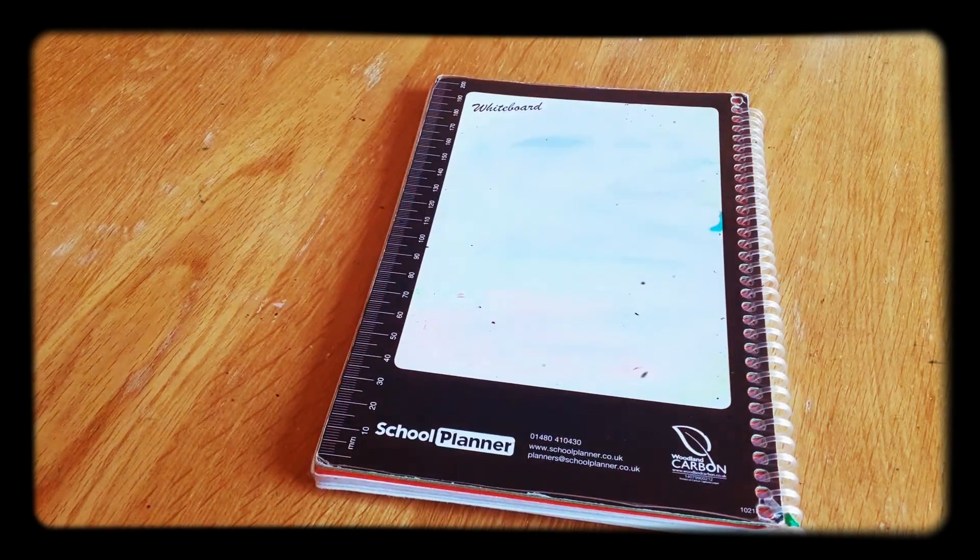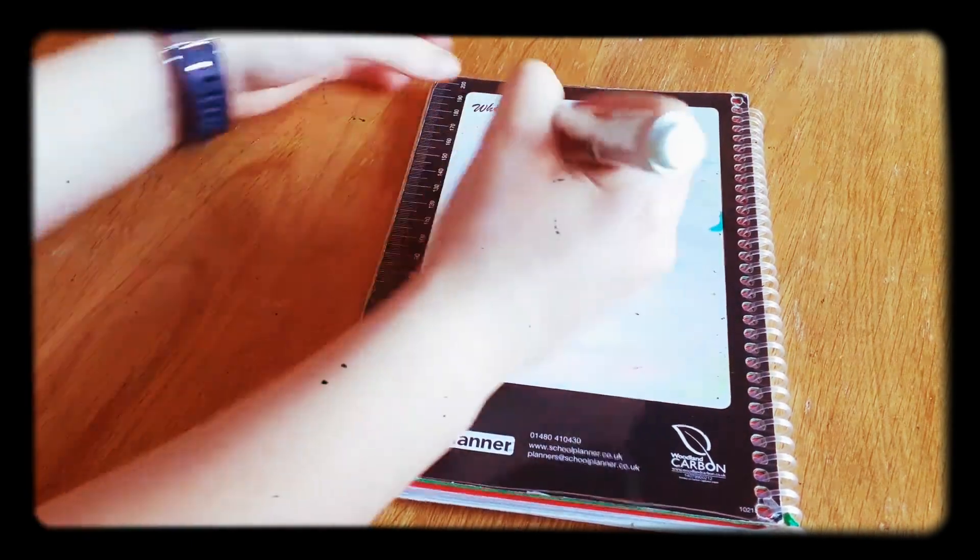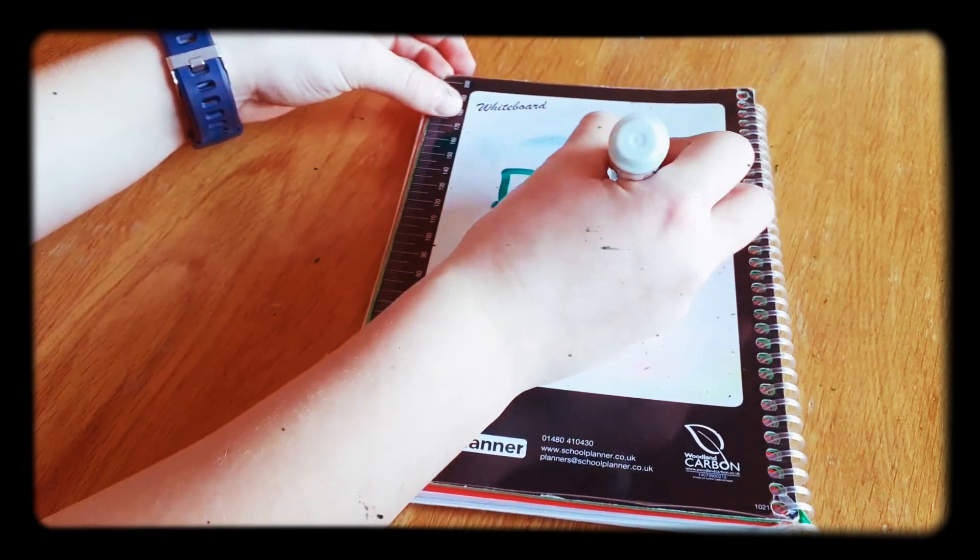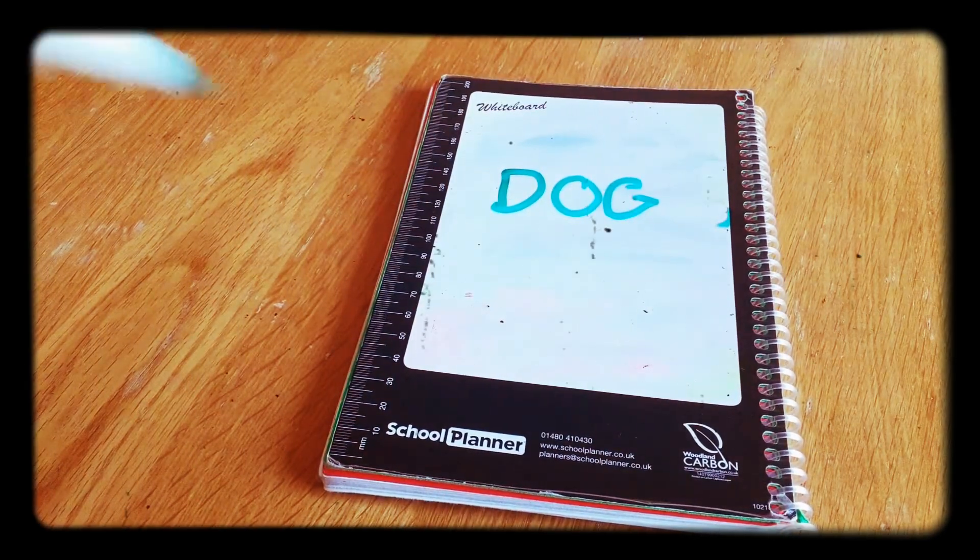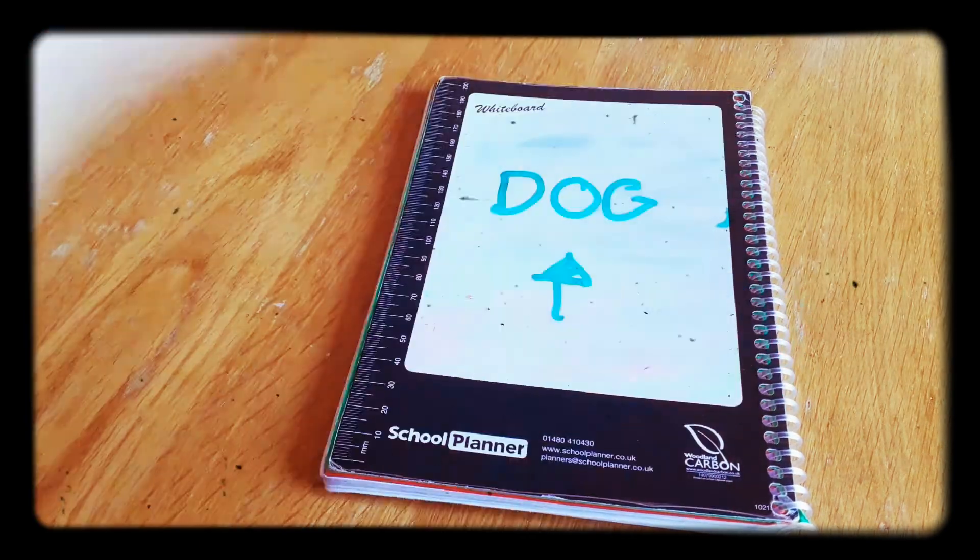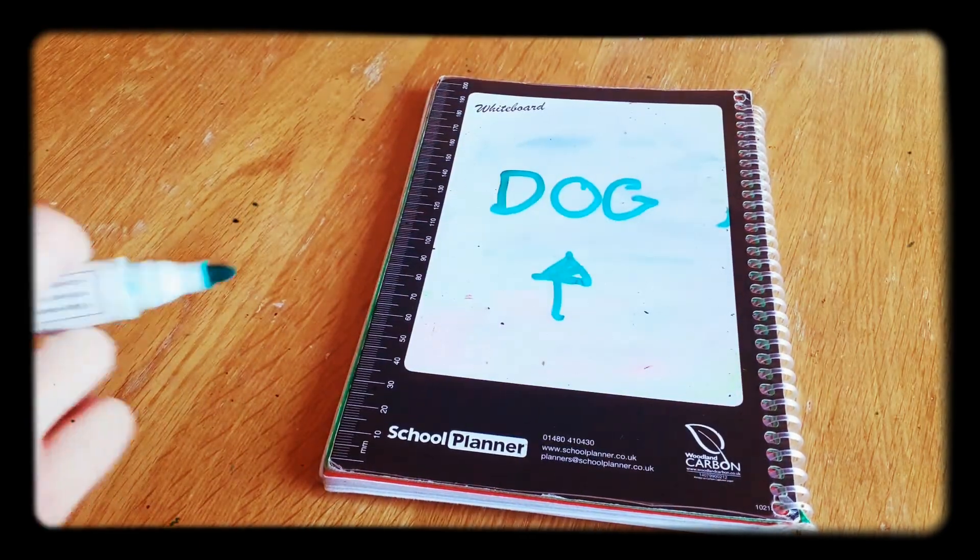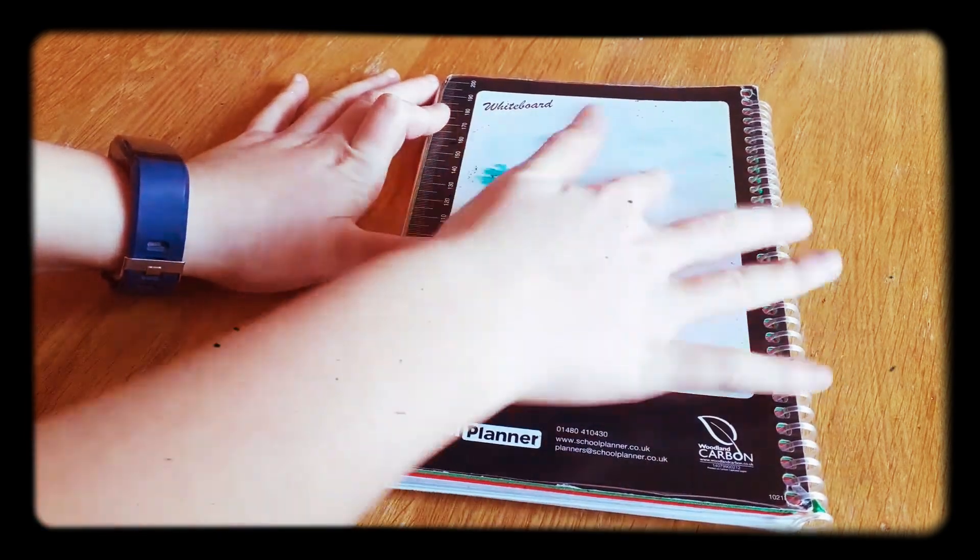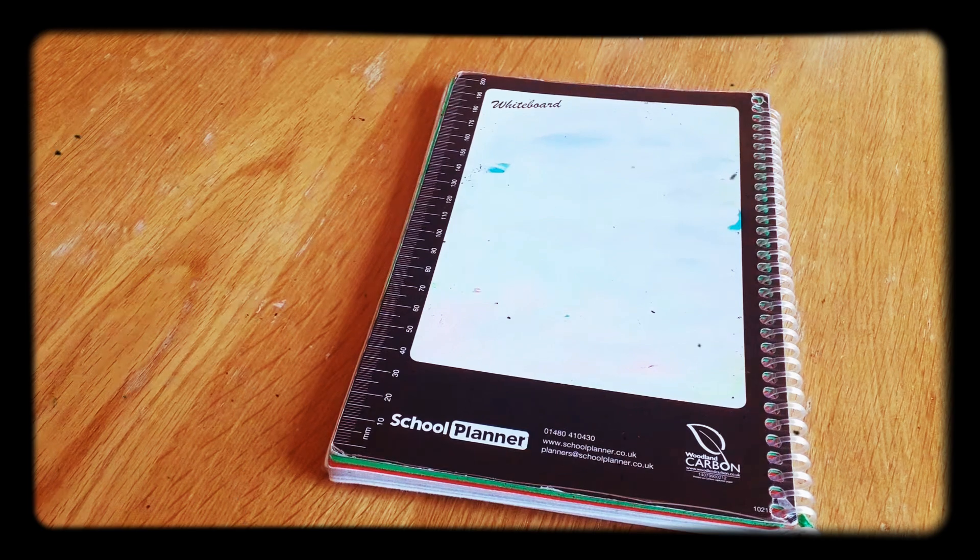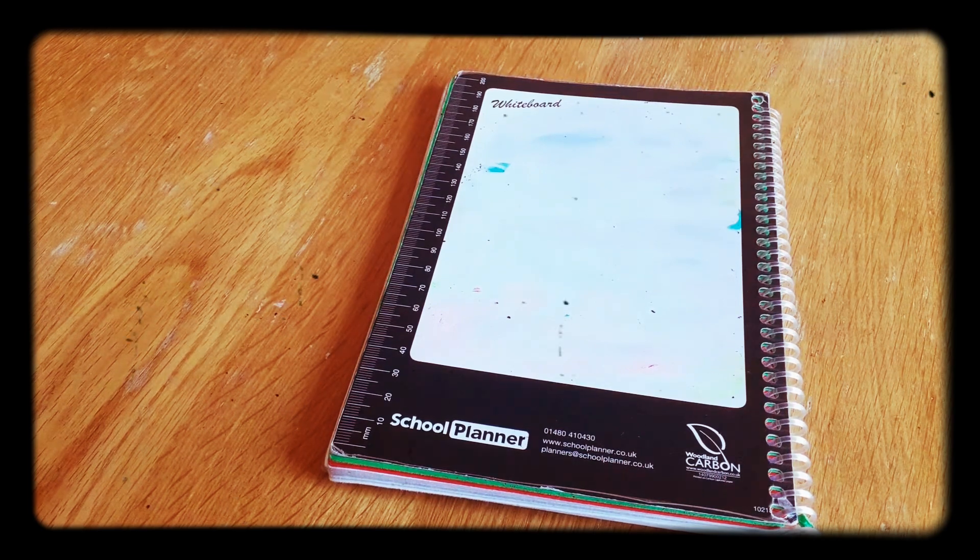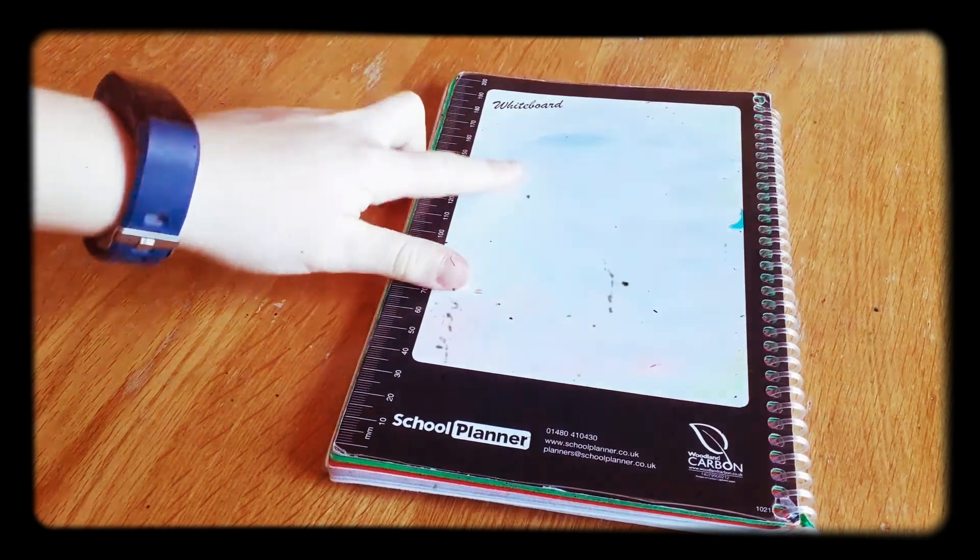Right, so now into the real stuff. First of all, let's draw a dog. So I'm going to take this away, draw the dog and come back when it's done. Then I will be coming through step by step to show you how to do it.